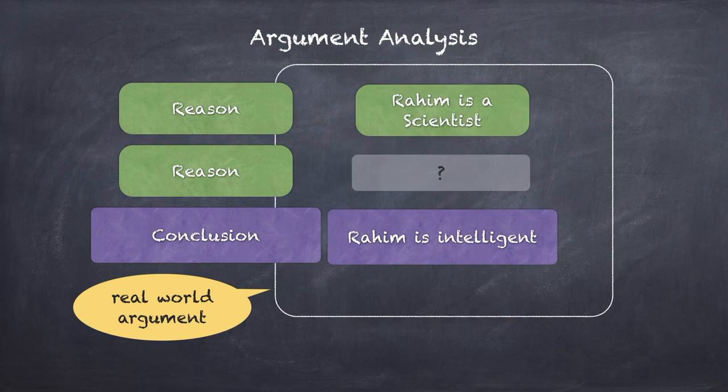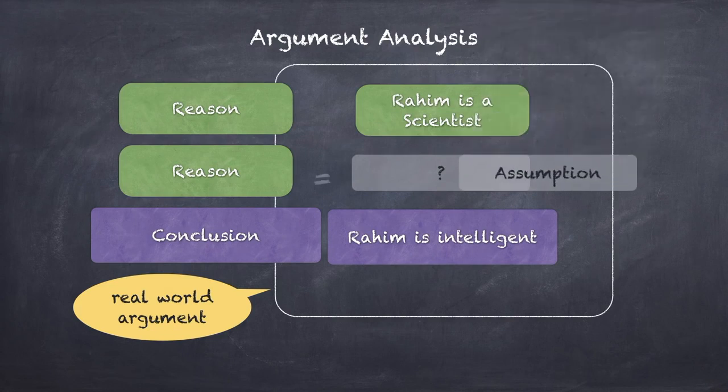In real world arguments, not all reasons are stated, but they're still part of the process — they add to the logic, just not explicitly mentioned. An unstated reason is known as an assumption.